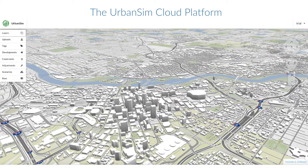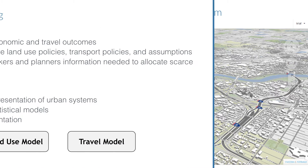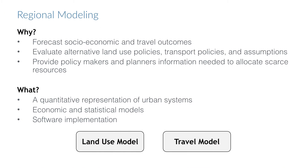Now with the UrbanSim Cloud Platform, we hope to bring the UrbanSim methodology to a broader array of planners worldwide. Regional planning agencies in the United States and internationally use models for forecasting and policy analysis. For example, in the United States, metropolitan planning organizations, also known as MPOs, often use model-based forecasts of land use and travel to inform their long-range regional transportation plans.